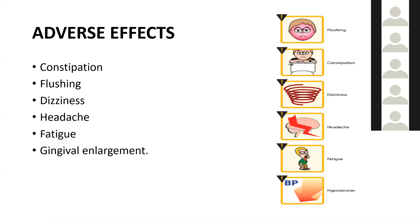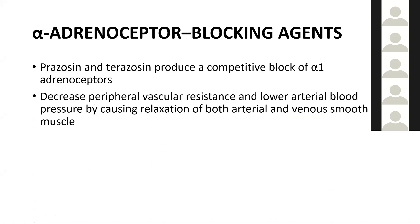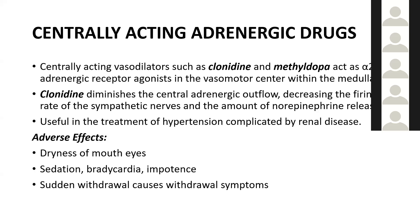Alpha adrenoreceptor blocking agents such as prazosin and terazosin produce a competitive block of alpha-1 adrenoreceptors, decreasing peripheral vascular resistance and lowering arterial blood pressure by causing relaxation of both arterial and venous smooth muscles — thus dilating both arteries and veins, unlike calcium channel blockers. Centrally acting adrenergic drugs such as clonidine and methyldopa act as alpha-2 adrenergic receptor agonists in the vasomotor center within the medulla, diminishing central adrenergic outflow and decreasing firing rate of sympathetic nerves and norepinephrine release.